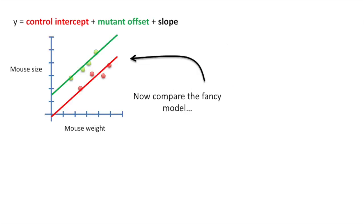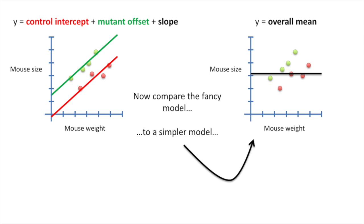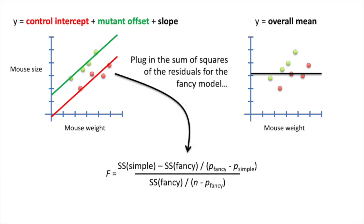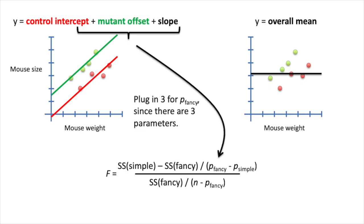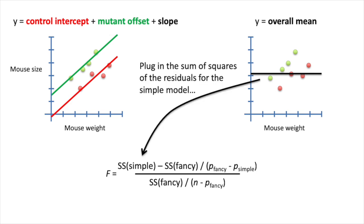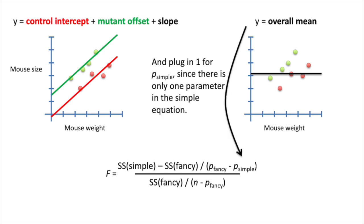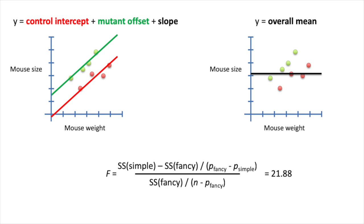Once we have the locations on the lines, we can calculate the residuals — which are very small in this example. Now we compare the fancy model to a simpler one. In the simpler model, we model mouse size using just the average size, ignoring both mouse weight and mouse type — this is the default model used in a t-test. Plugging in the sum of squares of residuals for the fancy model, with p-fancy equal to 3 parameters, and the sum of squares for the simple model with p-simple equal to 1, gives us F = 21.88 and a p-value of 0.003.